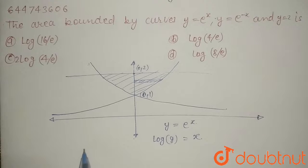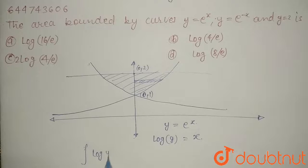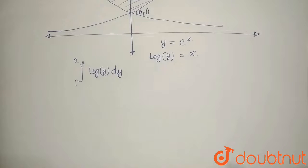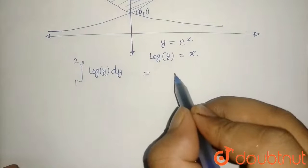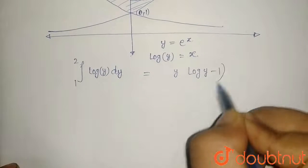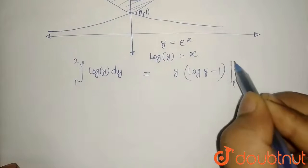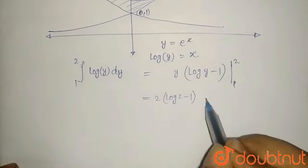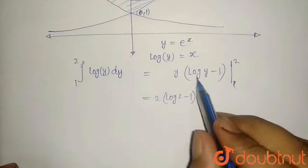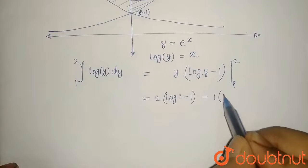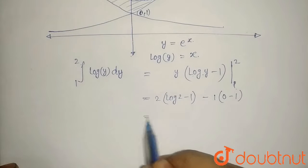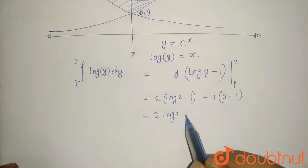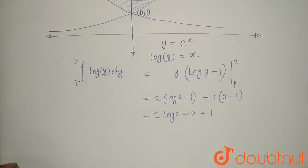Now we will integrate x as a function of y, log y from y equals 1 to 2, dy. This is a standard integral that equals y log y minus 1, evaluated from 1 to 2. For 2, this equals 2 log 2 minus 2 minus 0, which simplifies to 2 log 2 minus 1.